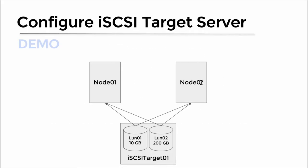Before we can start deploying and configuring the Hyper-V role using the failover cluster feature, we need to deploy an iSCSI target server which can provision shared iSCSI volumes to the Hyper-V nodes, node 01 and node 02. These shared iSCSI volumes will be mapped as clustered shared volumes onto Hyper-V nodes to store virtual machine files. One of these volumes will be used as a quorum disk. iSCSI target 01 is the iSCSI target server in this lab environment. First, we will install the iSCSI target role service on this server.